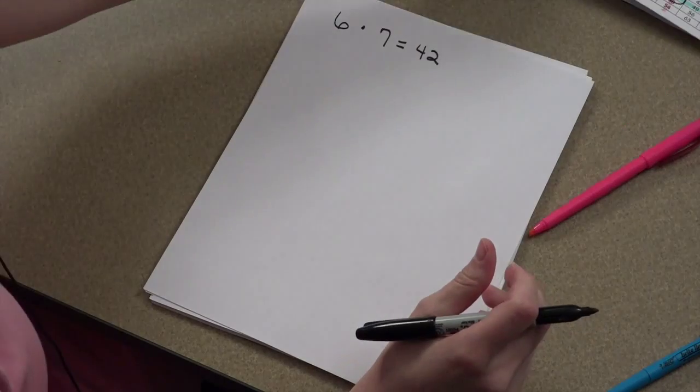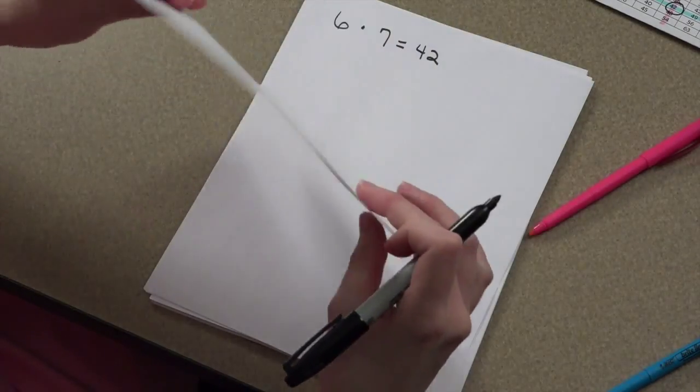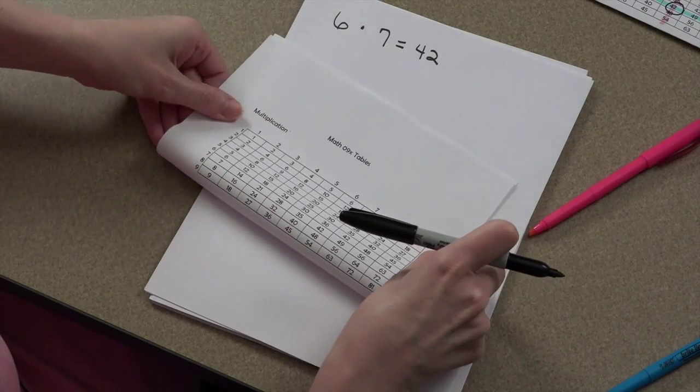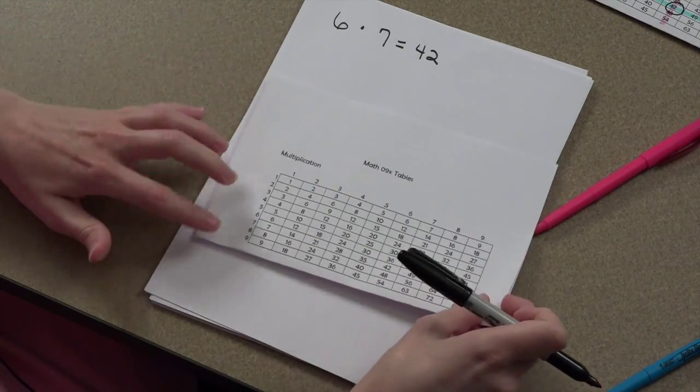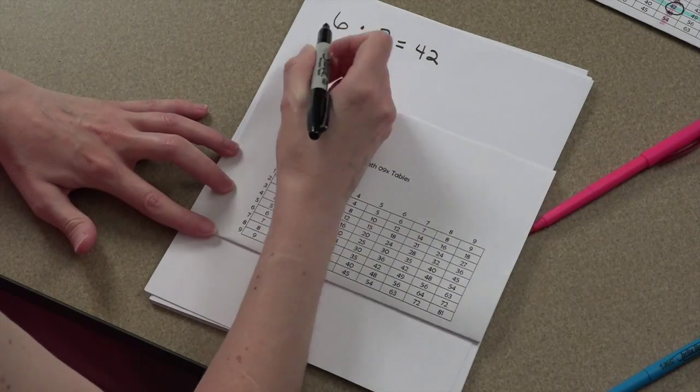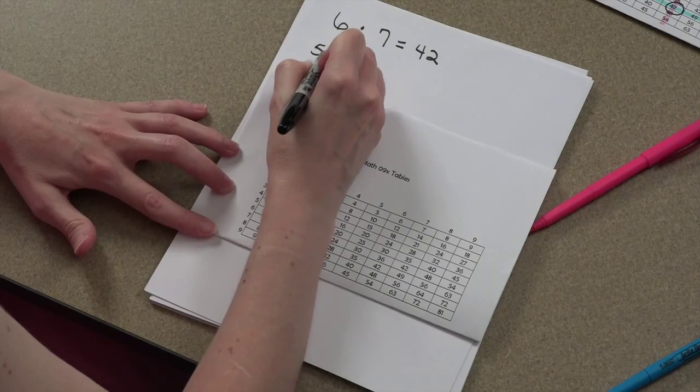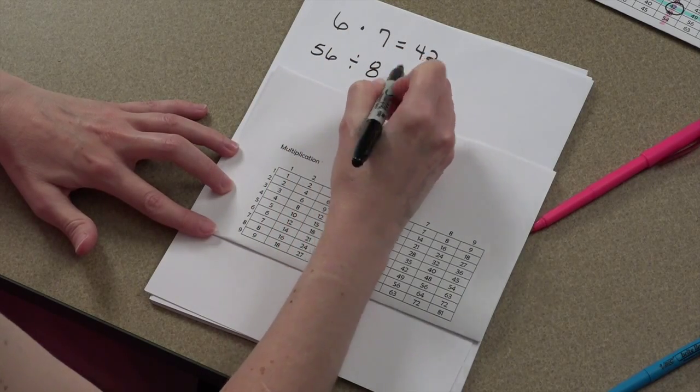Now the fun part of this is when you use this for division. Because there's lots of ways you can use this. So you want to take the number 56 and divide it by 8.